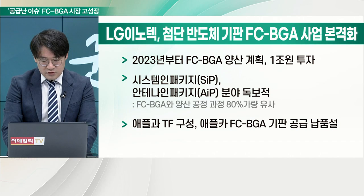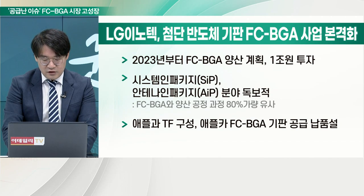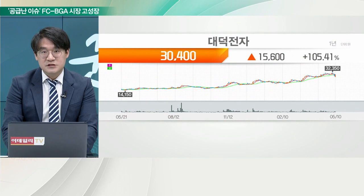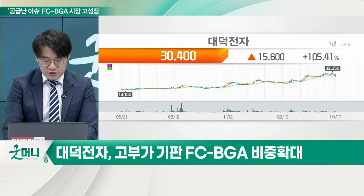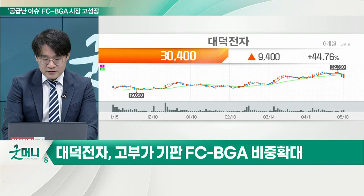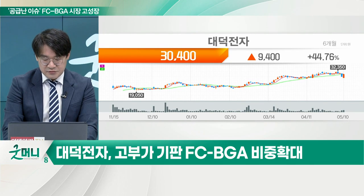중견기업 중에는 대덕전자가 가장 앞서서 이 분야에 투자를 하고 있습니다. 가장 최근에는 2,700억 원 규모의 시설 투자 진행을 공시로 내놨으며, 이는 자기자본 대비 39.6% 수준입니다. 이를 통해 연매출 4,000억 원 이상의 생산 캐파를 확보할 수 있으며, 투자 기간은 2024년 12월 31일까지입니다.